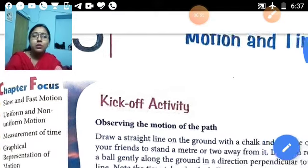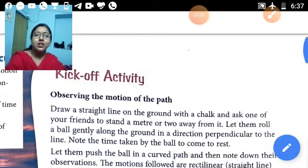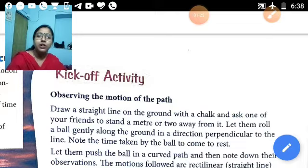First of all we will see the activity. The activity is observing the motion of the path, that means we have to observe the movement of the path or the road. Draw a straight line on the ground with chalk and ask some of your friends to stand a meter or two meters away from it. Let them roll a ball gently along the ground in a direction perpendicular to the line and note the time taken by the ball to come to rest.